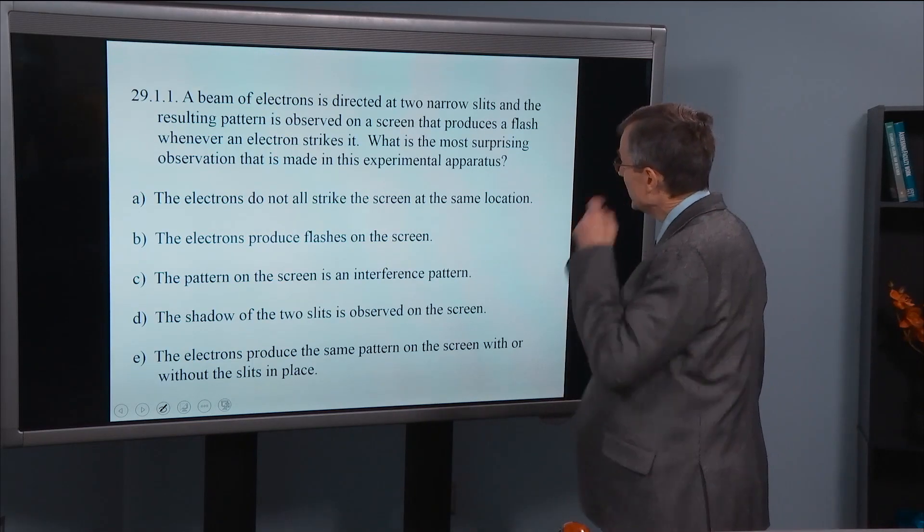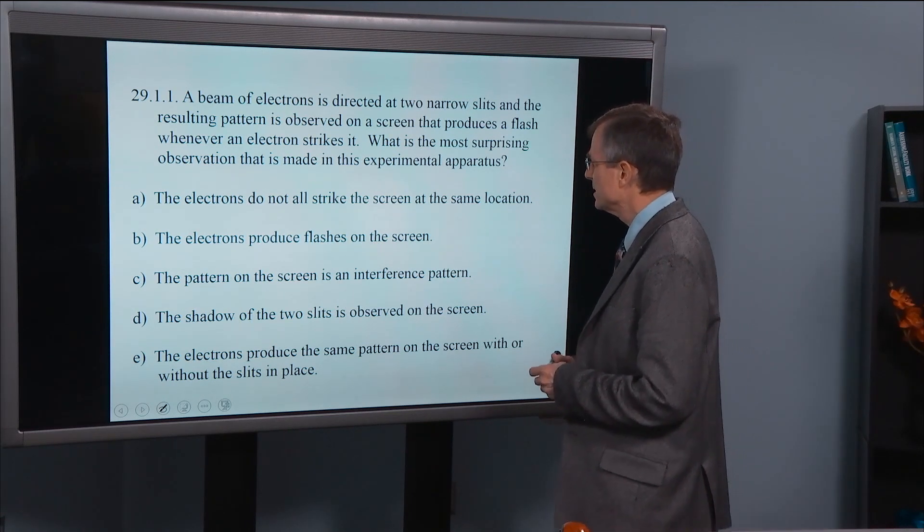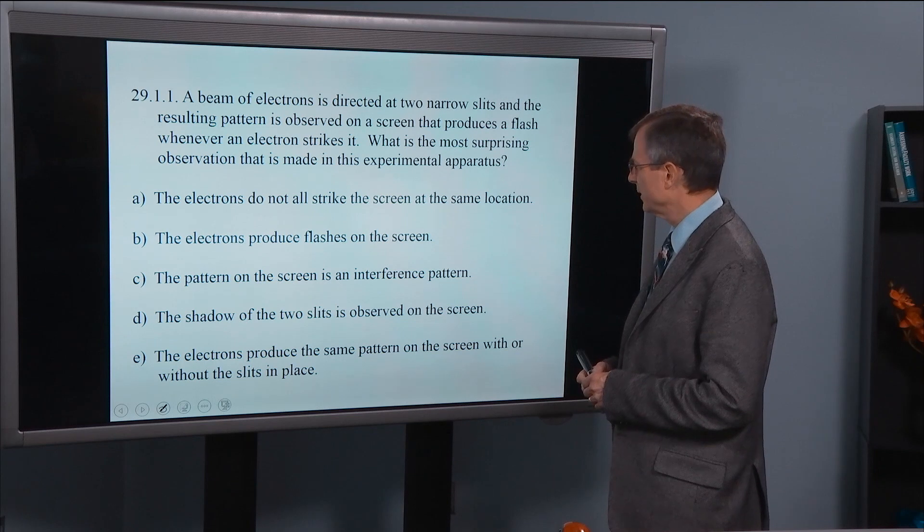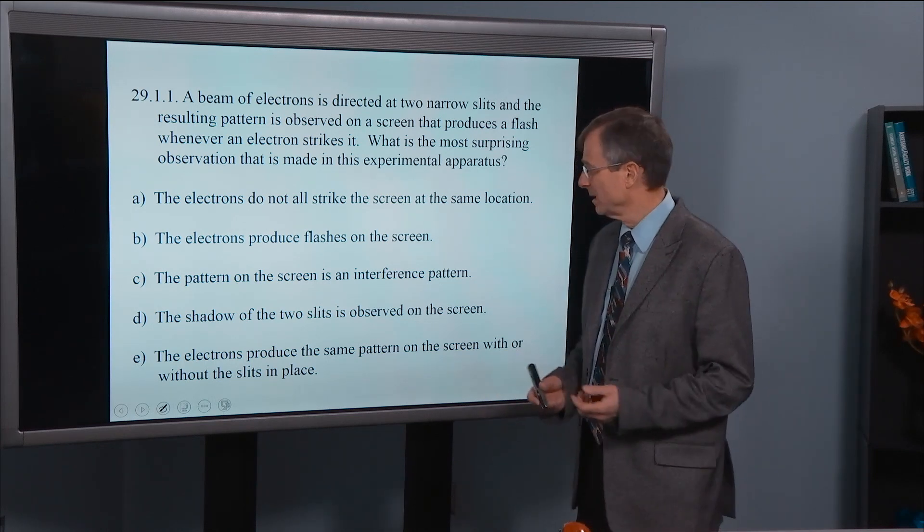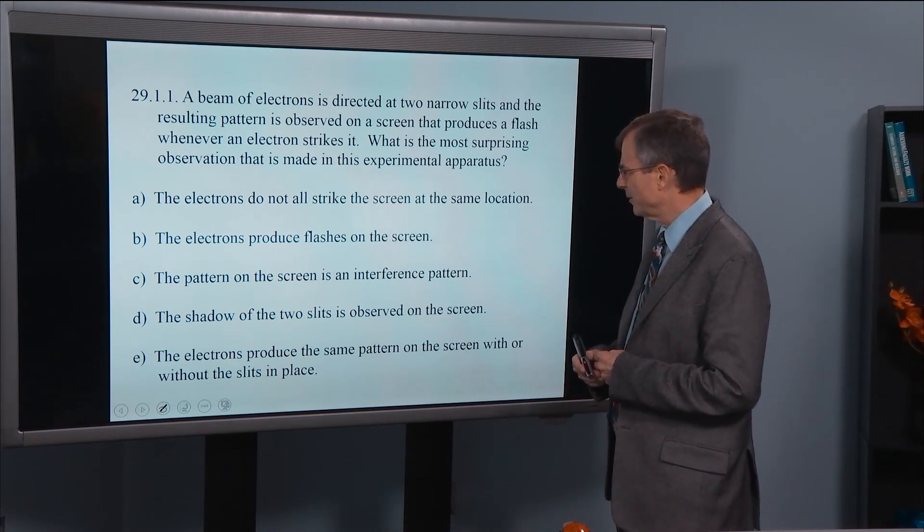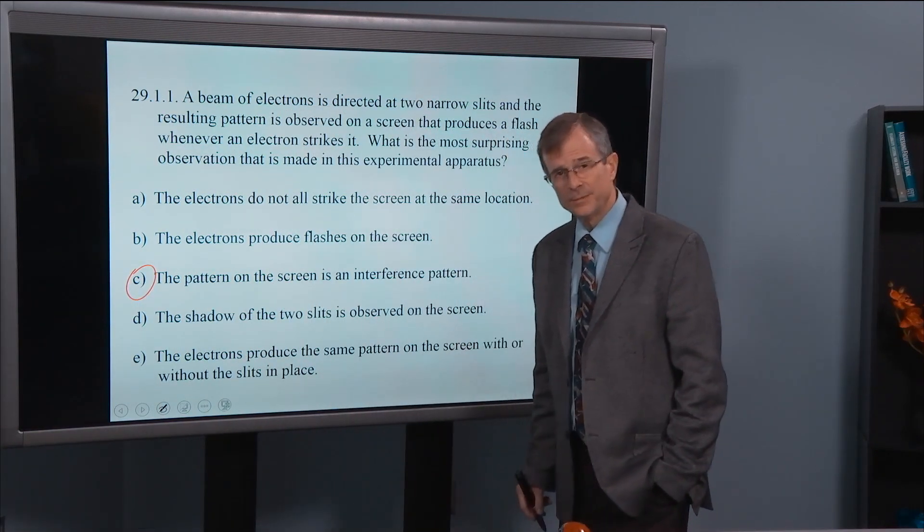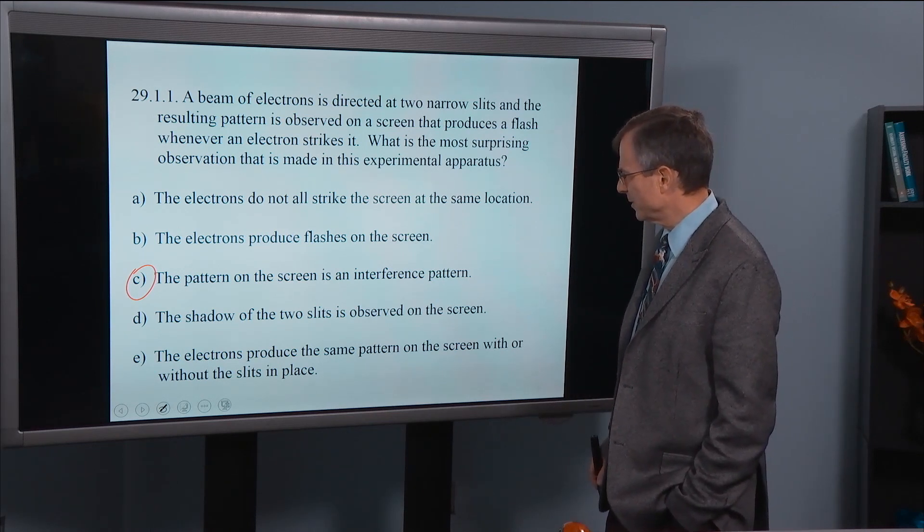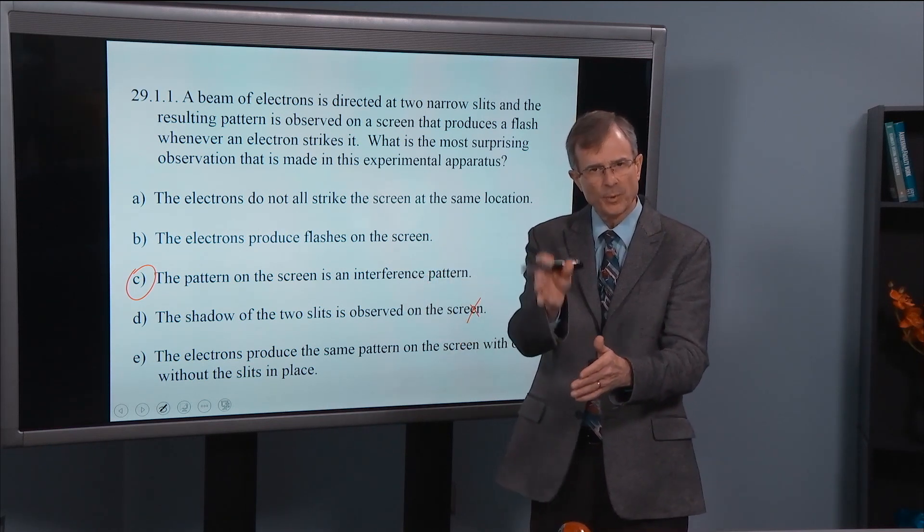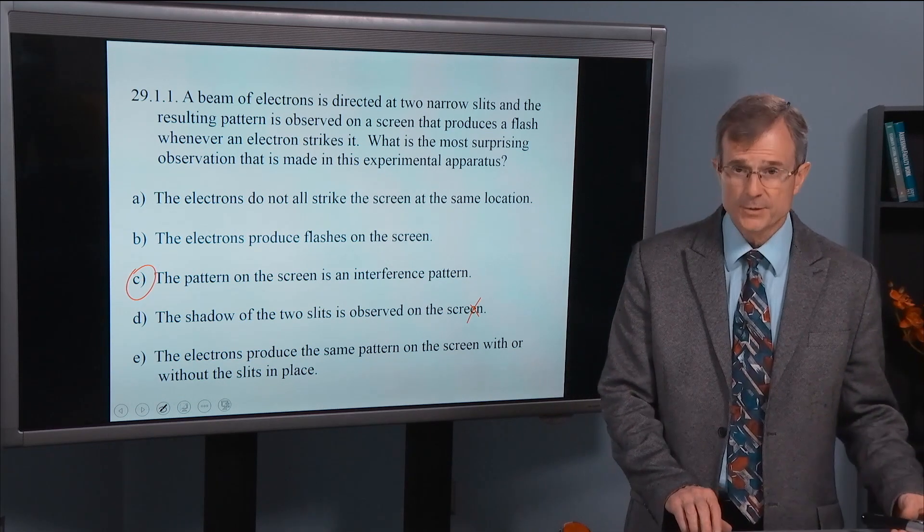So a beam of electrons is directed at two narrow slits and the resulting pattern is observed on a screen that produces a flash whenever an electron strikes it. What's the most surprising observation that is made in this experiment? Electrons do not all strike the screen at the same location. Well, that's not too surprising. The electrons produce flashes on the screen. That's not surprising either. The pattern on the screen is an interference pattern. Yeah. That's why it would be an interference pattern. The shadow of the two slits is observed on the screen. That's not true. It's not just the shadow of those two slits on there. It's a true interference pattern with bright, dark, bright, dark. Electrons produce the same pattern on the screen with or without slits in place. That just doesn't make any sense.